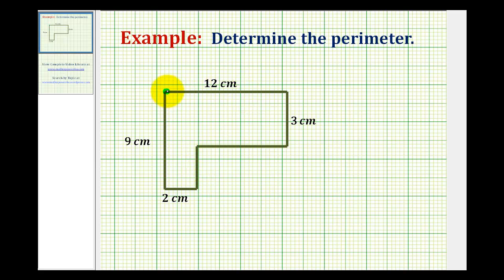Looking at our diagram, if this side has a length of 12 centimeters, it must be the same as the sum of the lengths of this side here and this side here. So if this is 12 centimeters and this is 2 centimeters, we can subtract 2 centimeters from 12 centimeters to find the length of this side here. 12 minus 2 would be 10, so the length of this side here would be 10 centimeters.